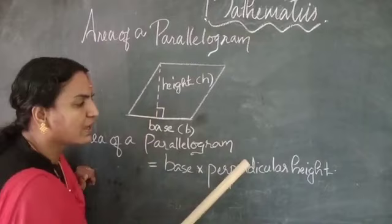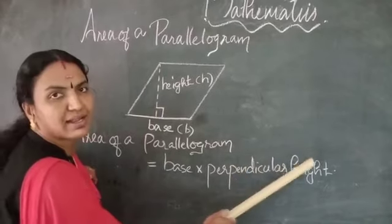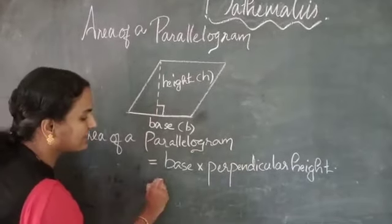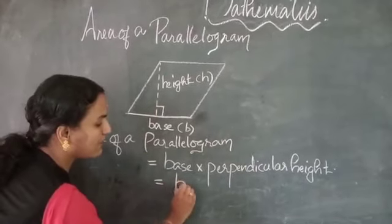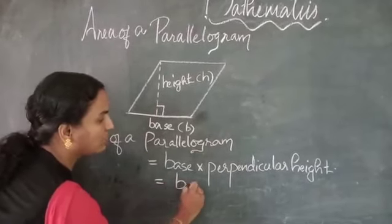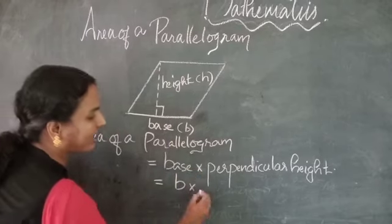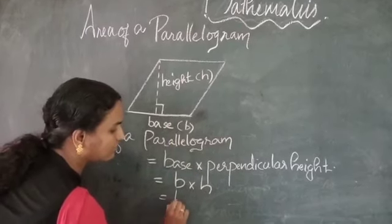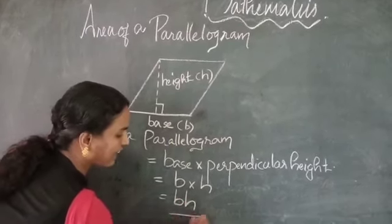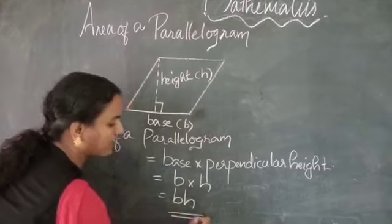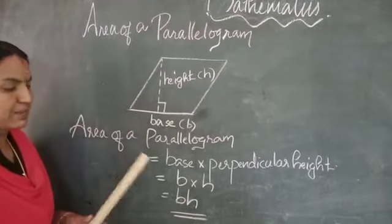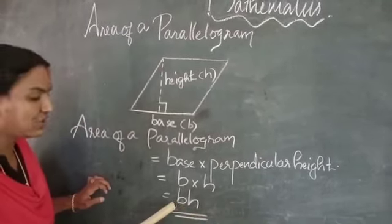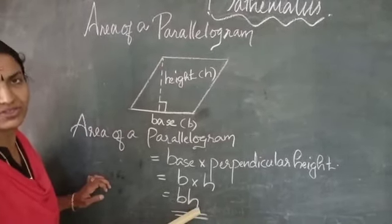So, area of a parallelogram is equal to base into perpendicular height. A equals B into H. The area of a parallelogram is base into height.